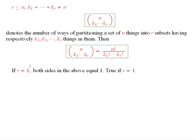So if r equals 1, you have k1 equals n, and you just have one way of doing it, so this thing here will be 1. On the other hand, over here, you're going to have n factorial over n factorial. So this side would also be 1. So when r equals 1, everything works.